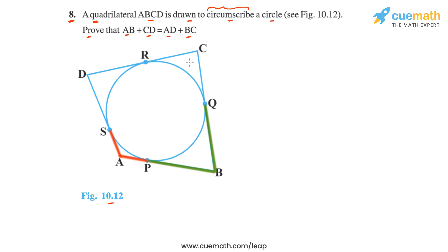Then CQ and CR will have the same length for the same reason. And similarly, DR and DS will have the same length — DR is this segment and DS is this segment.